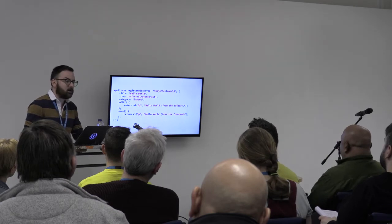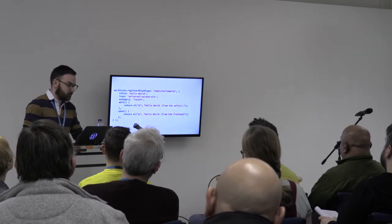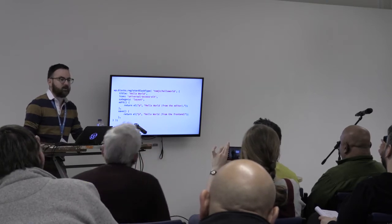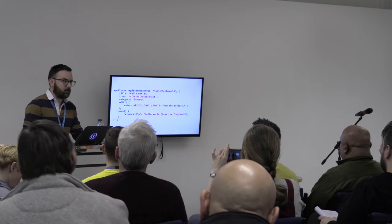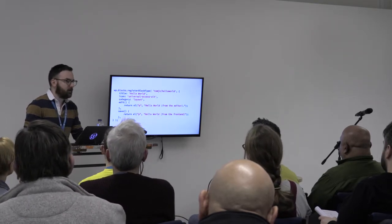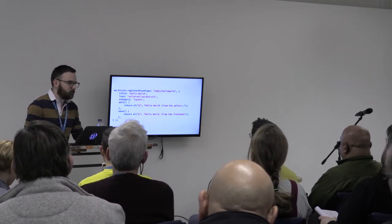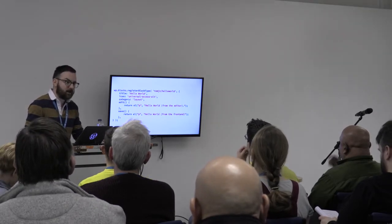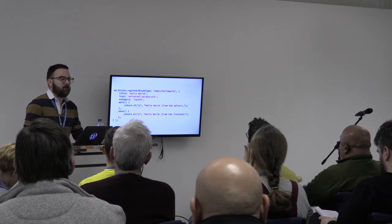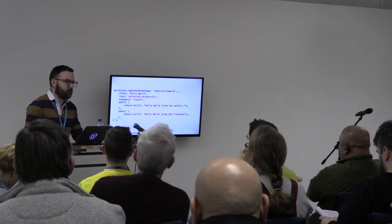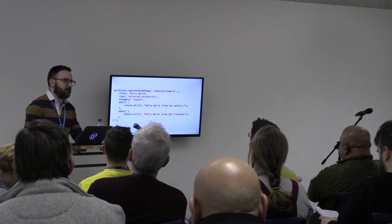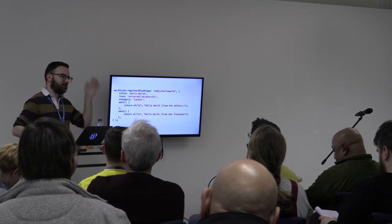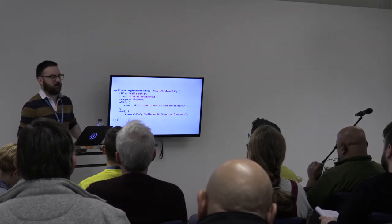To create a block, we register it — that's the registerBlockType function. We give it a name, some information, and two functions. In JavaScript, there is a main WP object, and hanging off of that is a place for all the random WordPress stuff that's JavaScript-related. There are data stores and things that make it easy to work with the REST API, but we're not going to talk about that today.